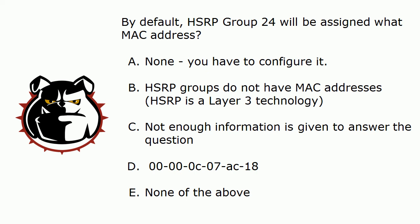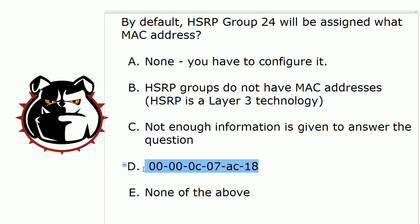HSRP Group 24 will be assigned what MAC address? You have been given enough information to answer the question, and the information is right there — 24. The correct answer is D: 0000.0C07.AC18. The first five octets of the MAC address are reserved for HSRP, so 00000C07AC we know is correct.